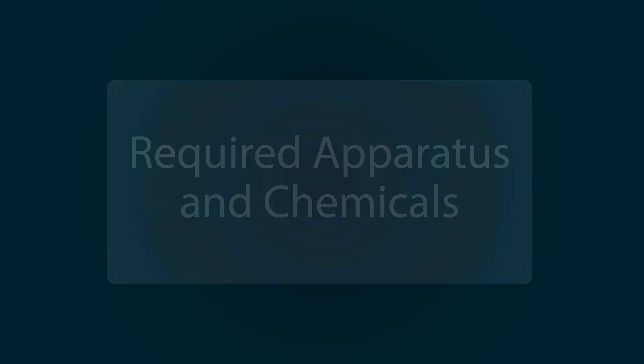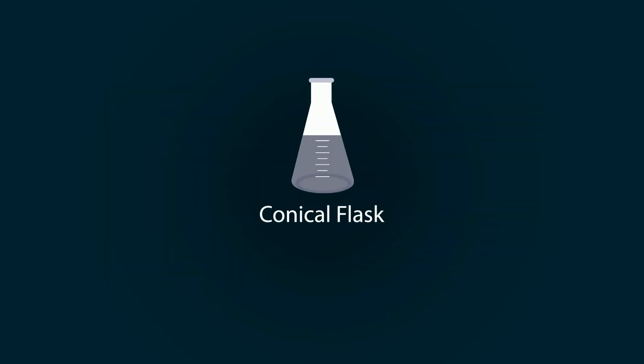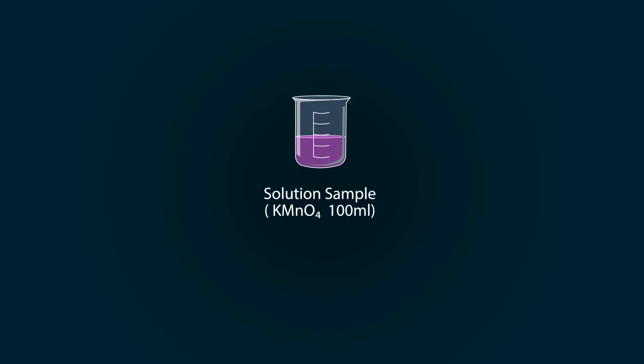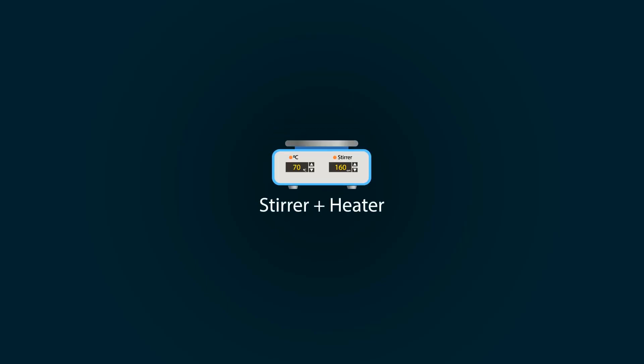Required apparatus and chemicals include a conical flask, oxalic acid of 0.1 molar, dilute H2SO4, pipette of 50 milliliters, an iron stand, a burette of 100 milliliters, a funnel, solution sample of KMNO4 100 milliliters, a stirrer plus heater, and a magnetic bar.